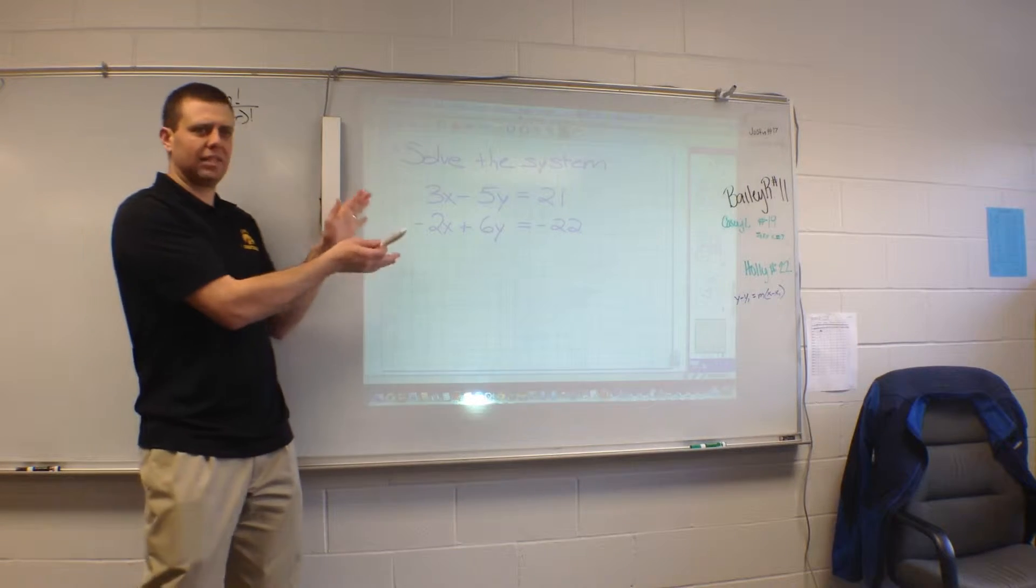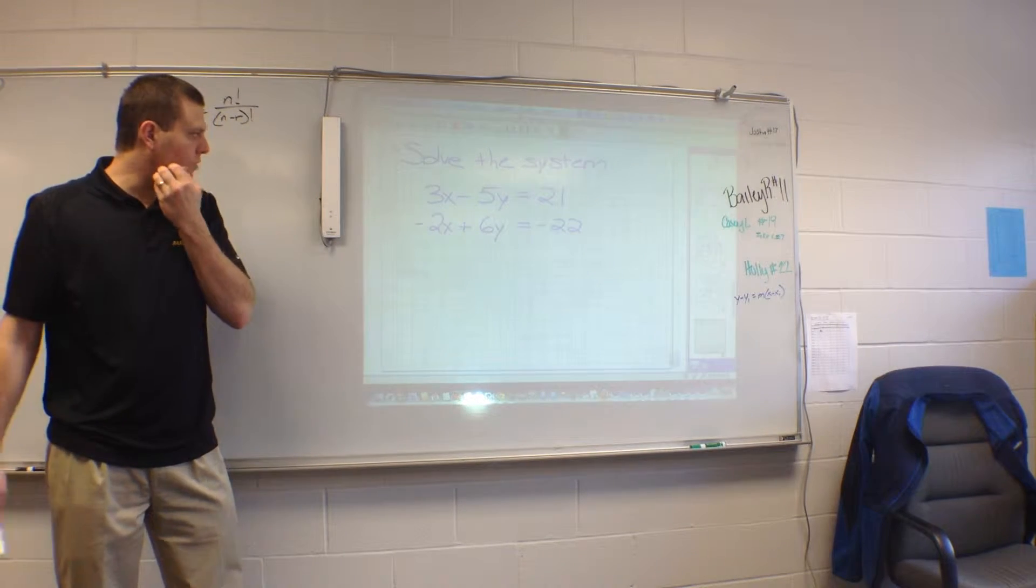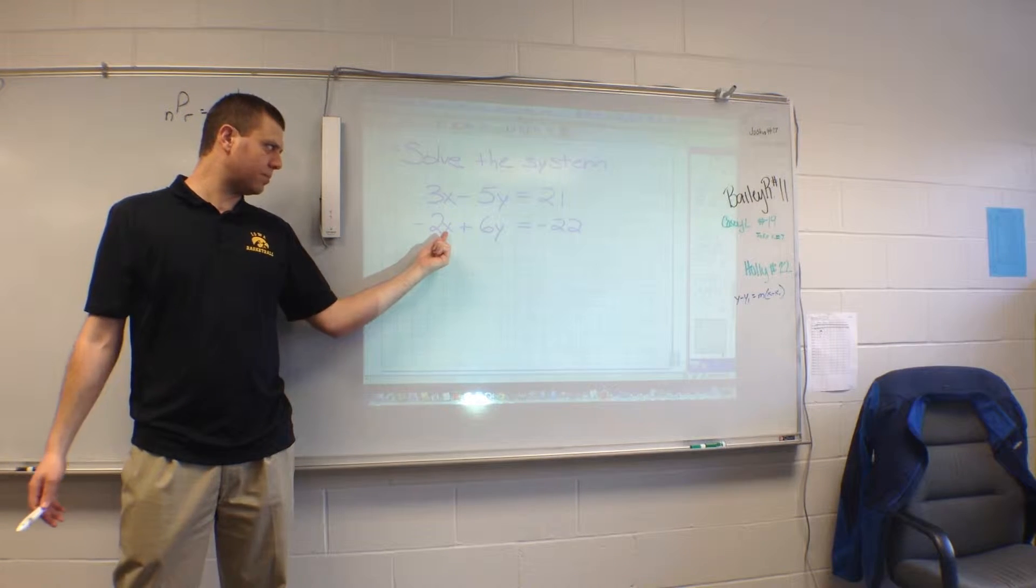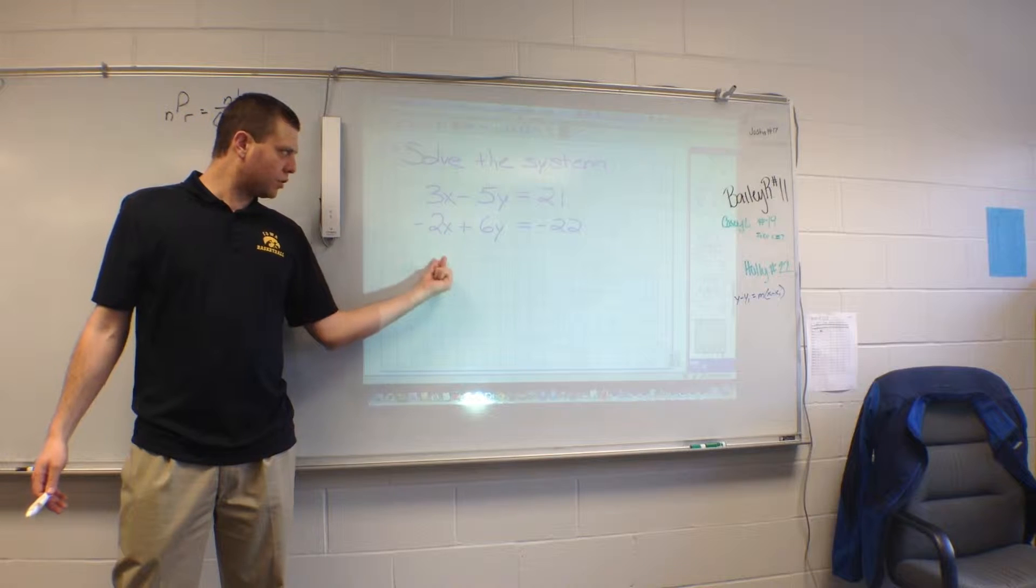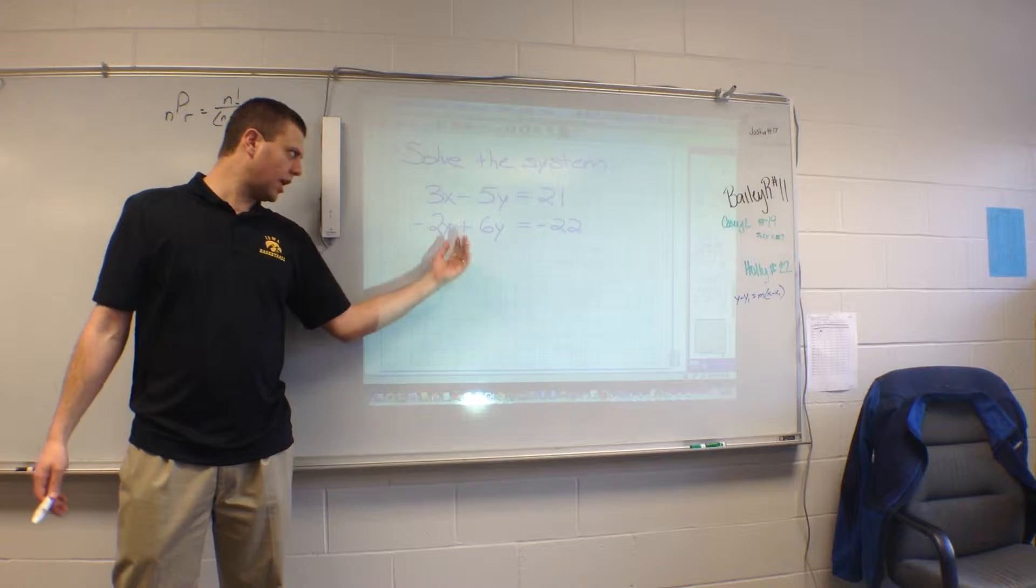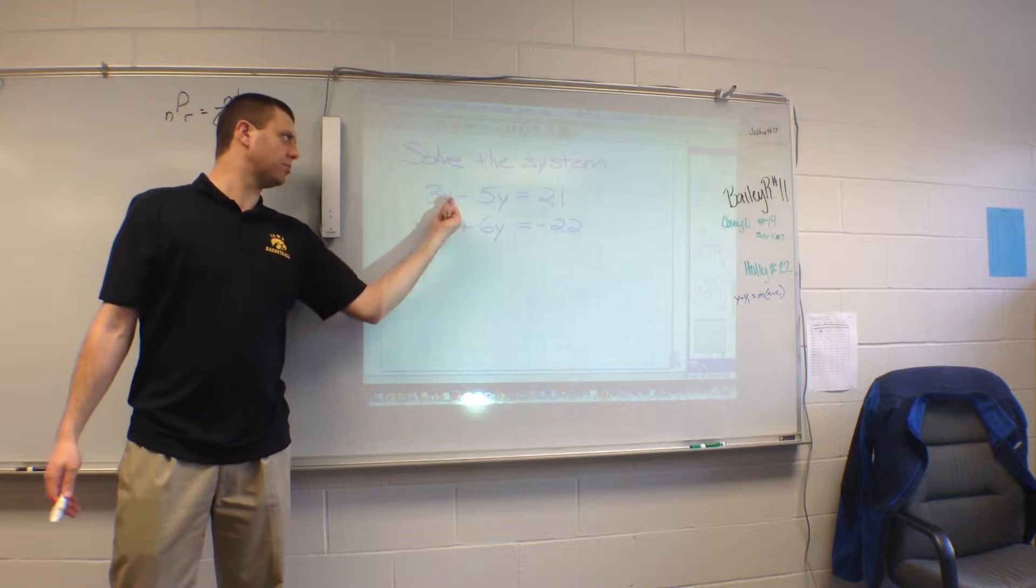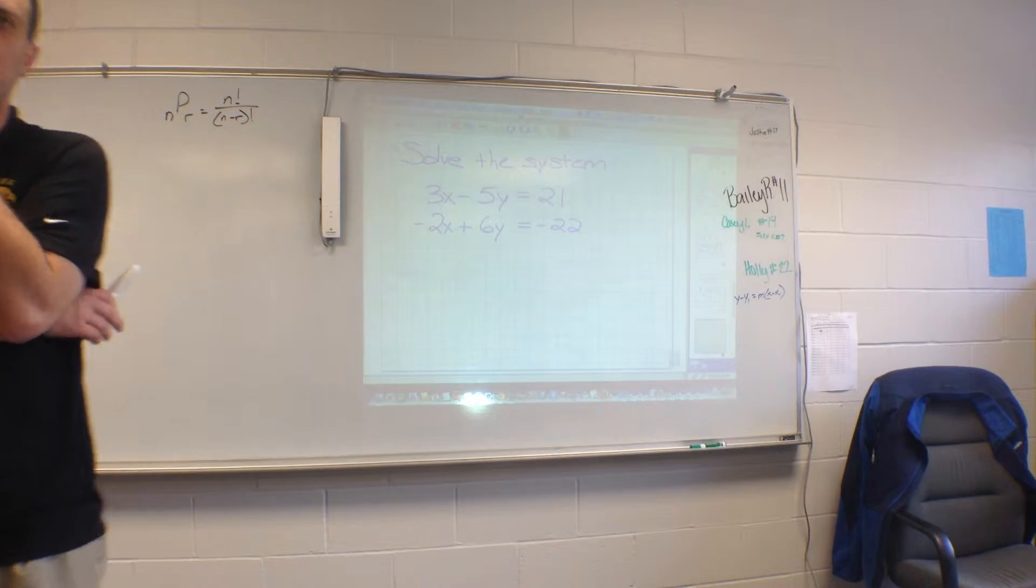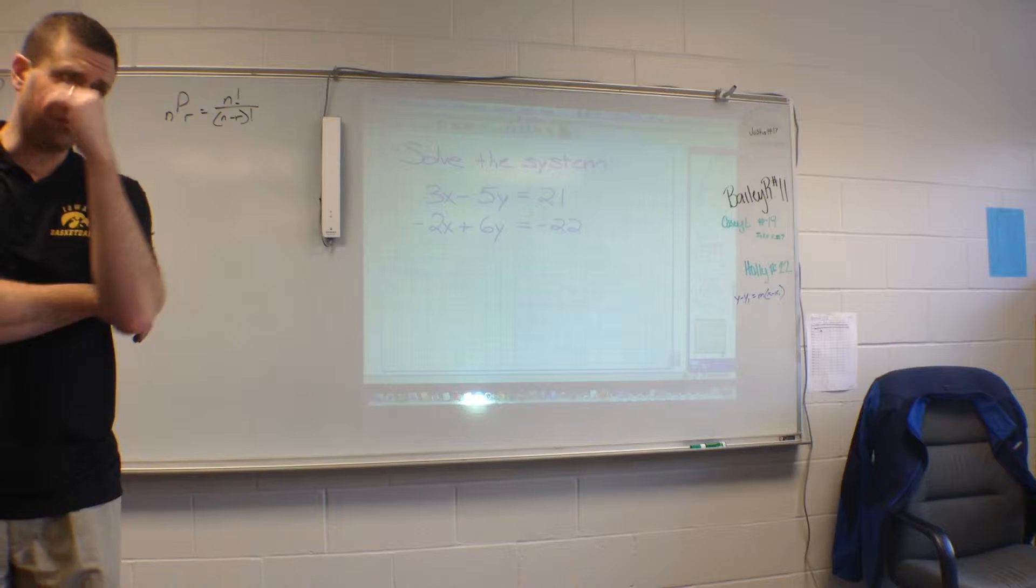And if I gave you this now, I am betting that most of you would probably choose substitution. If you had to, you might get this x by itself, subtract 6y from both sides, then whatever x equals, substitute it into this one and solve from there. That's probably the way most of you would do it if I gave you the freedom to do it any way you wanted to.